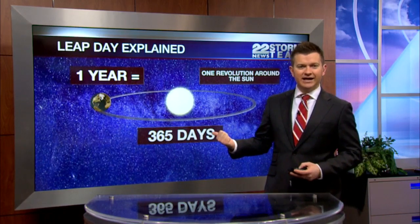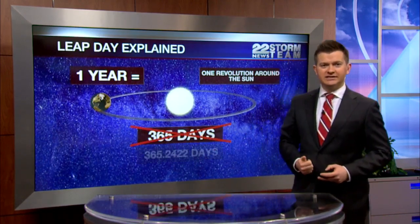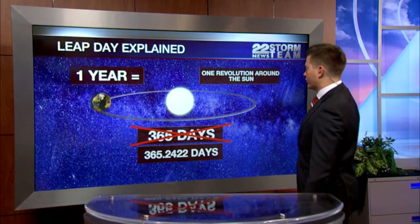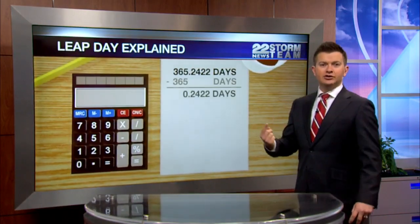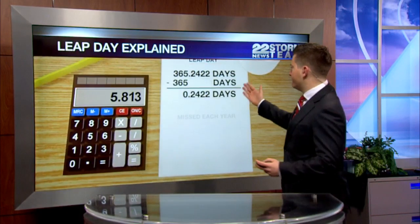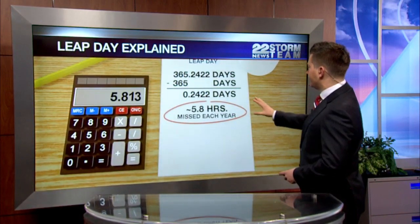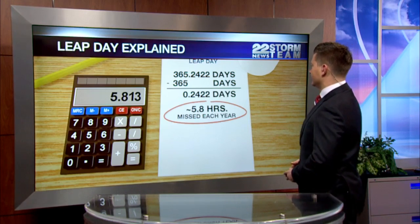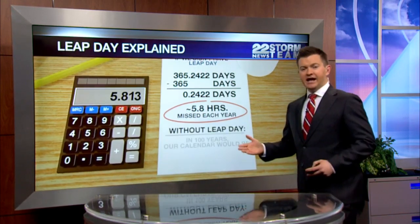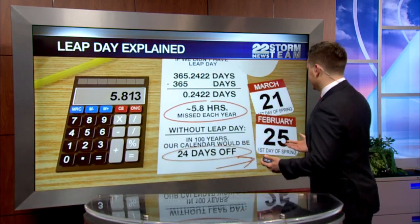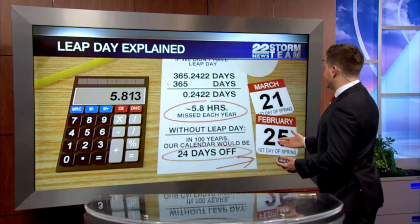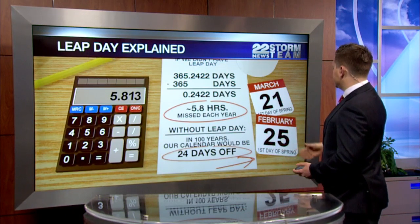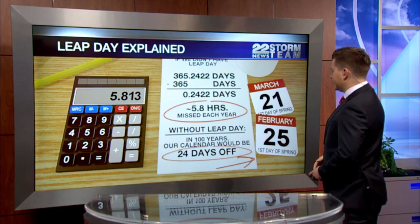However, that's not technically correct. It's not an even 365 days. It's actually 365 and around a quarter of a day for the earth to go around the Sun once. So we're missing out on a quarter of a day, or 5.8 hours, each year by doing this rounding. Without a leap day, the first day of spring would change from March 21st to February 25th in 100 years time.